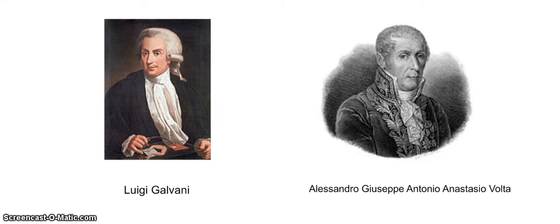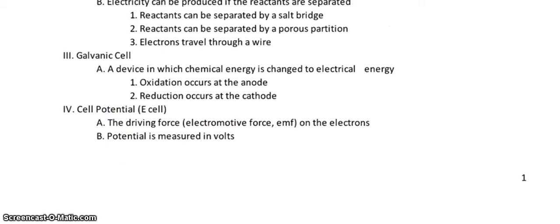Here's the other guy, Alessandro Giuseppe Antonio Anastasio Volta. Volta was the one that actually came up with this idea of volts, which is this electron potential difference. We're talking about a difference, between the two metals. Depending on which metals you use, your differences are going to be different. The very first battery was actually created by Volta. He ended up using zinc and copper to make his first battery. This potential difference is measured in volts, named after Volta.